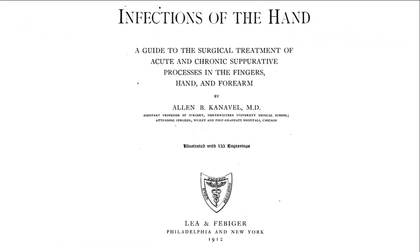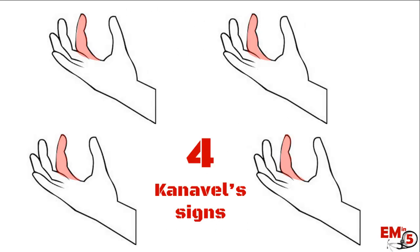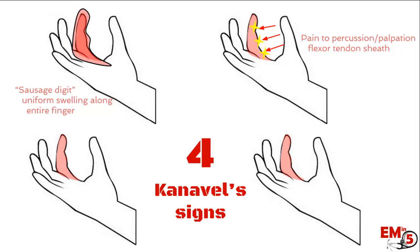The key to recognizing these infections is to identify the four characteristics described by Kanavel in the early 1900s. First, you have sausage digit — fusiform, uniform swelling along the entire finger. Next, pain to percussion or palpation along the flexor tendon sheath, along that flexor surface. Third, when the finger is held passively, you'll notice it's held in passive flexion — that's the comfortable resting position. And lastly, if you try to extend that finger passively, they'll have significant pain along that flexor surface.